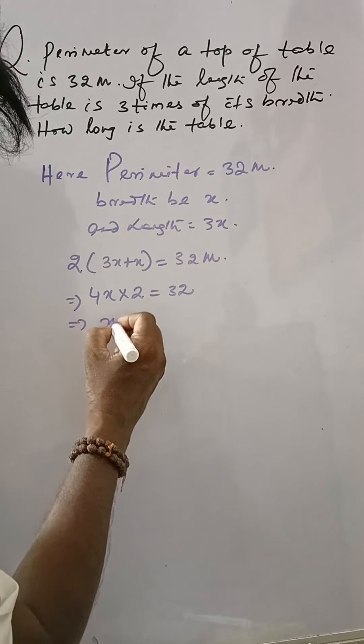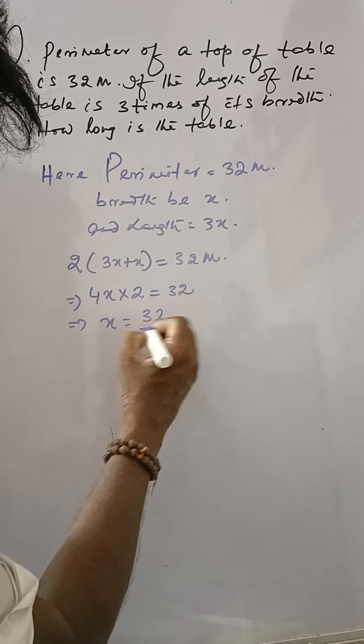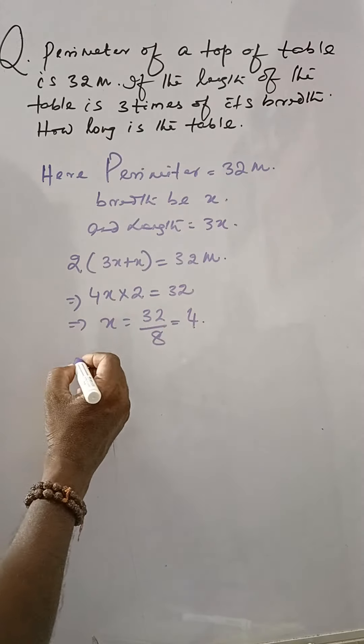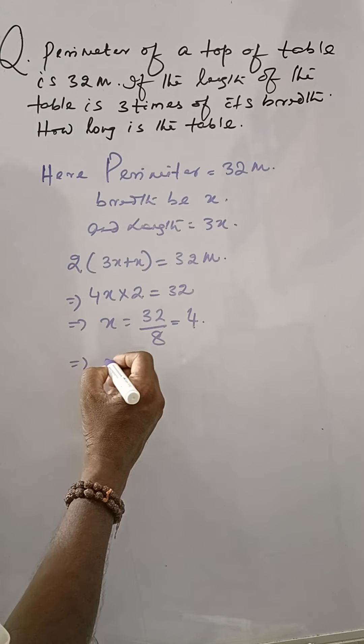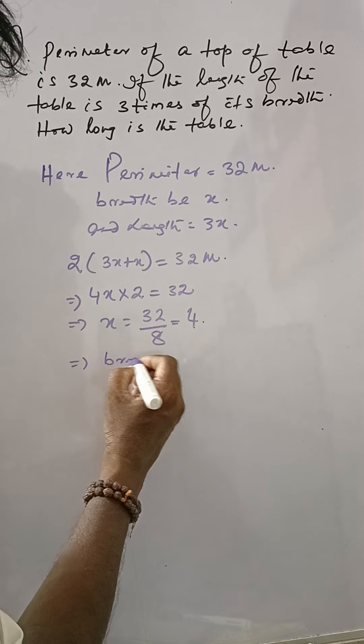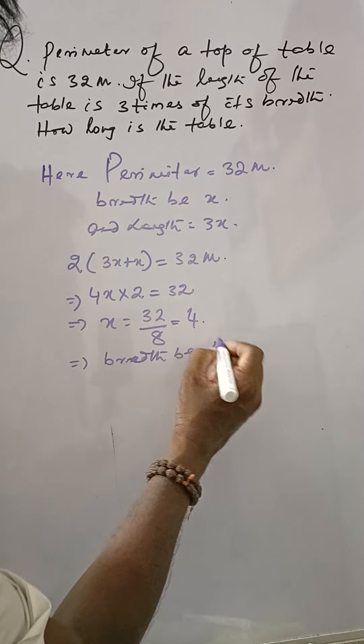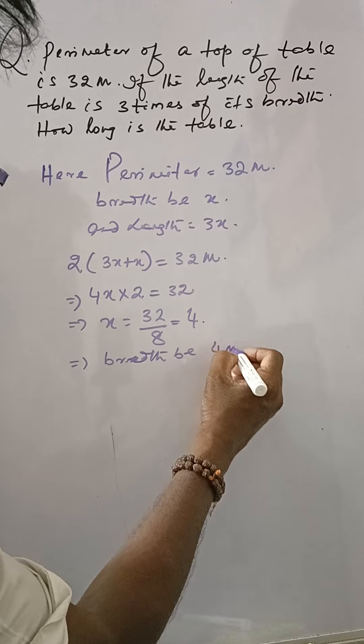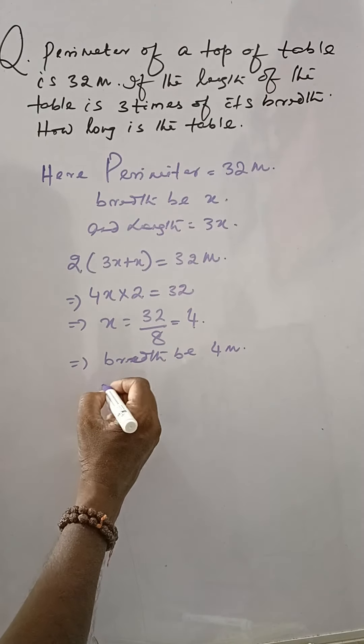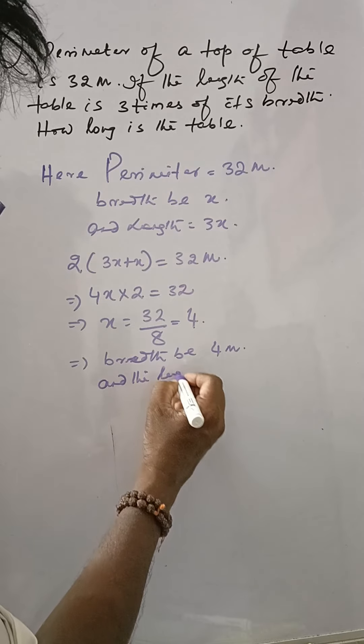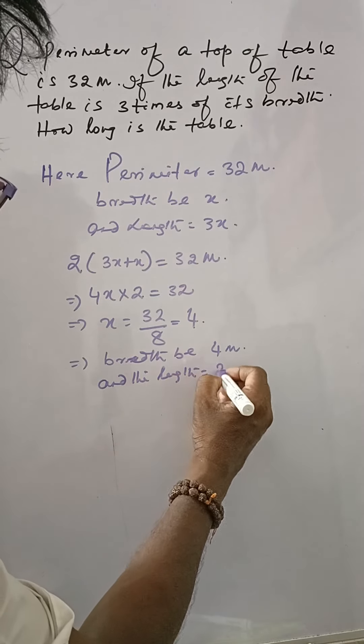Now, x equals 32 divided by 8, which is 4. So breadth is 4 meters and length equals 3x.